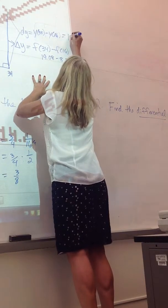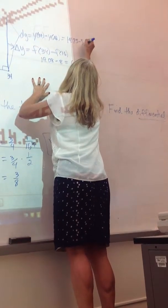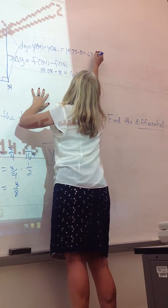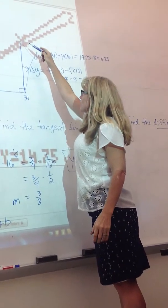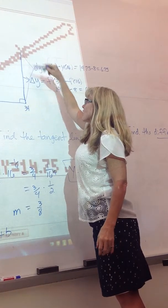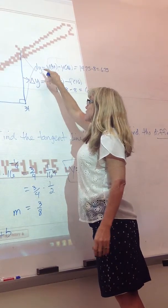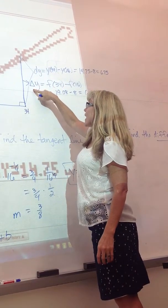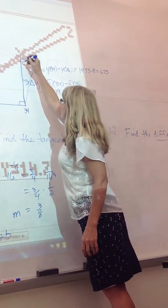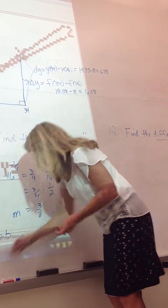So, 14.75 minus 8 is 6.75. So delta y is the difference between the y's on the tangent line—sorry, dy is the difference in y's on the tangent line, and delta y is the difference in y's on the function.